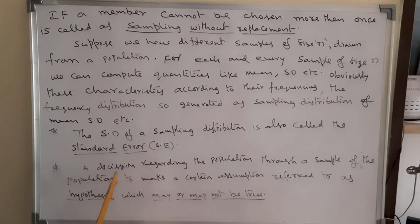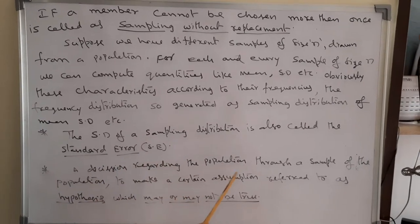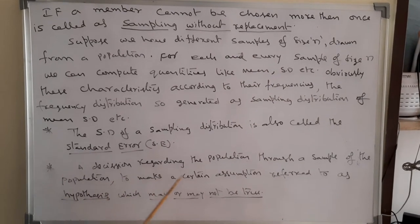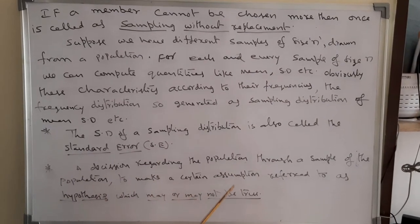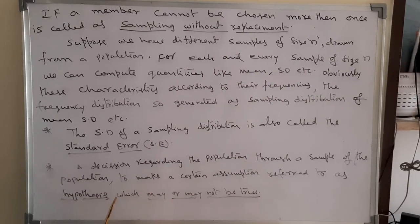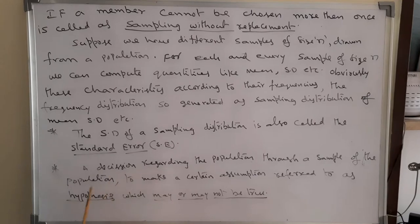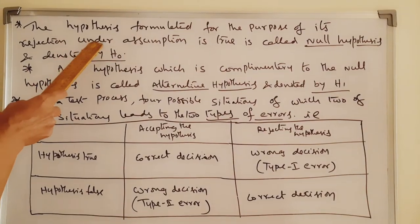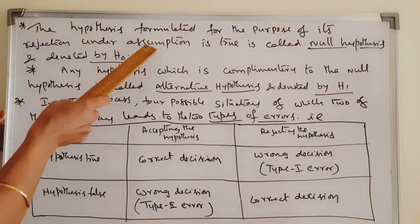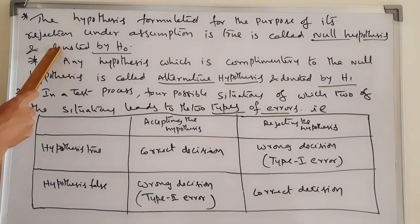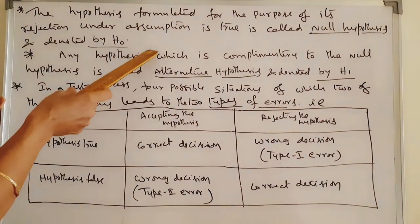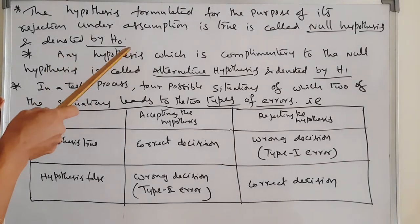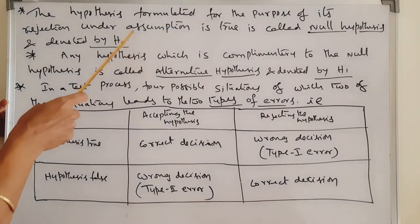Another concept: making an addition regarding the population through a sample — we make a certain assumption referred to as a hypothesis, which may or may not be true. The hypothesis formulated for the purpose of its rejection, under the assumption that it is true, is called the null hypothesis and is denoted by H0.